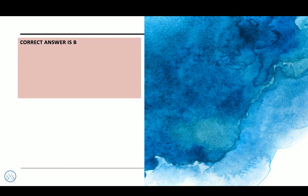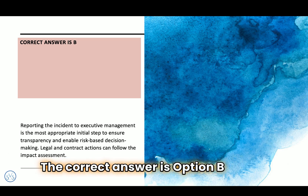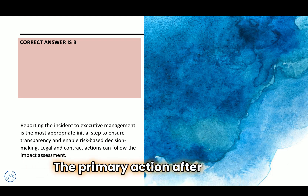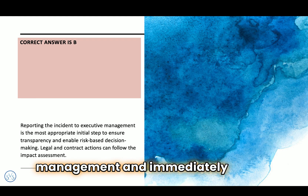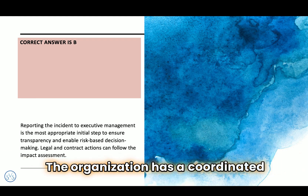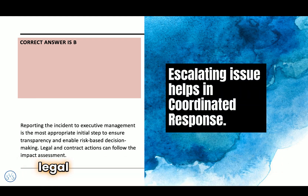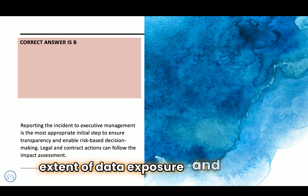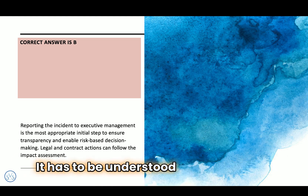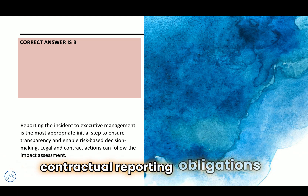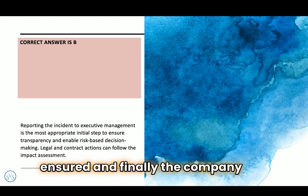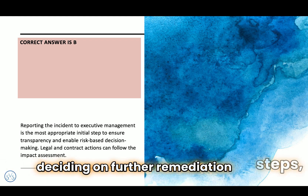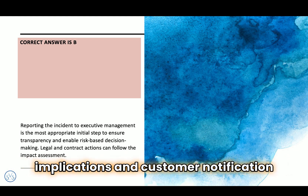The correct answer is Option B: report the incident to executive management and begin impact assessment. The primary action after a security incident should be to escalate the issue to executive management and immediately assess the impact. This ensures the organization has a coordinated response involving security, legal, compliance, and business teams. It also ensures the extent of data exposure and potential business impact is understood, that regulatory and contractual reporting obligations are met, and that the company can work with the vendor to investigate and mitigate the incident. Impact assessment is crucial for deciding on further remediation steps, legal implications, and customer notification if required.